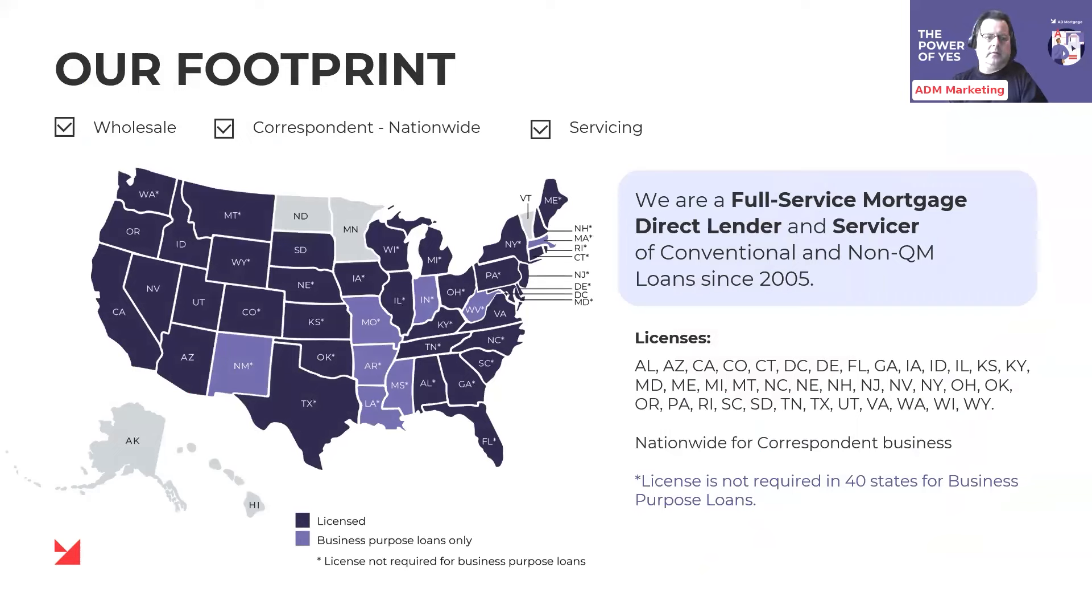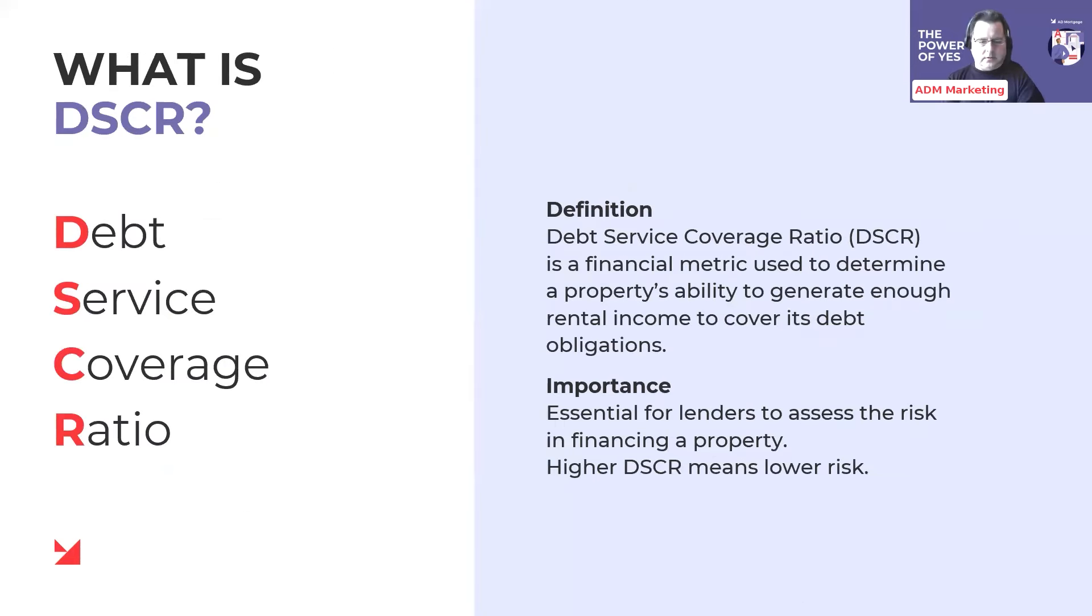We're a top non-QM lender. We are also highly competitive in the conventional and government space. We are both an originator and a securitizer of our mortgages with the assistance of a company called Imperial Fund. They're a sister partner who helps us securitize our loans on the capital market. And because of that, it allows us to be our own underwriter and write our own guidelines when it comes to non-QM loans.